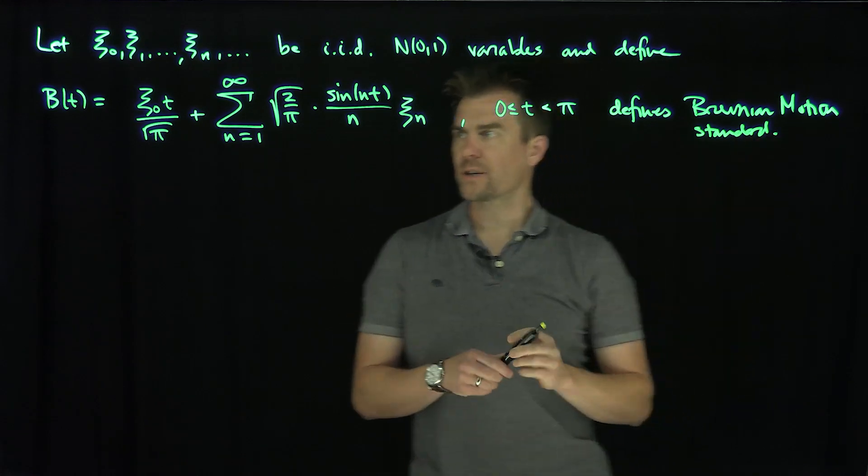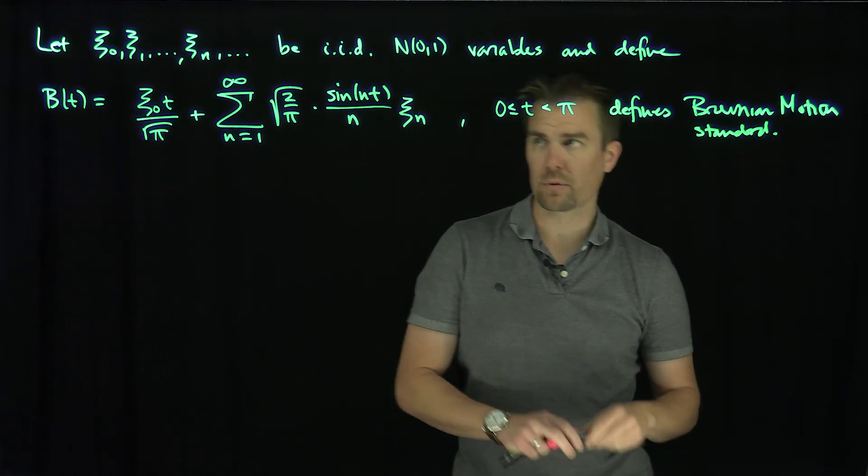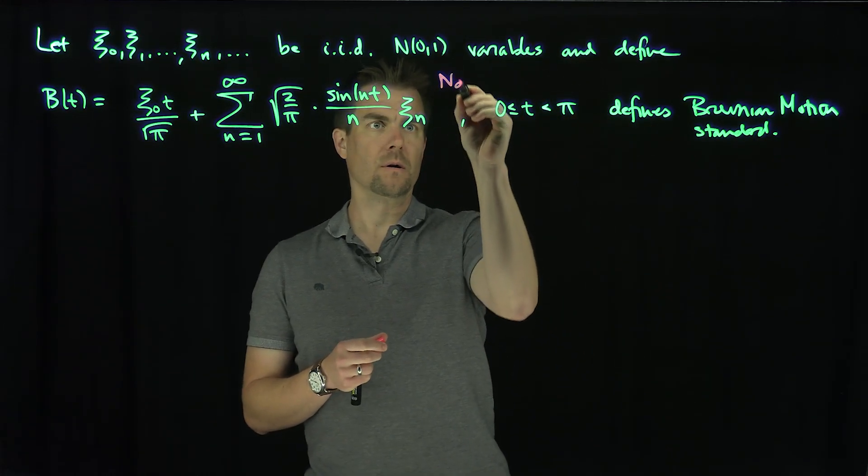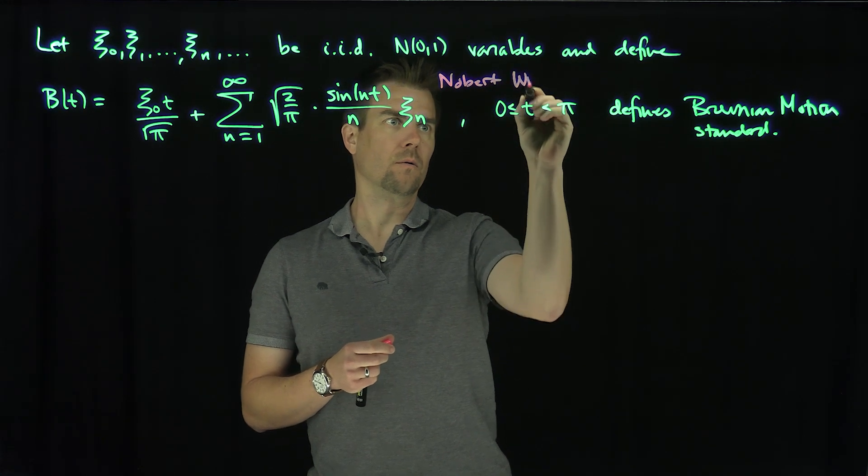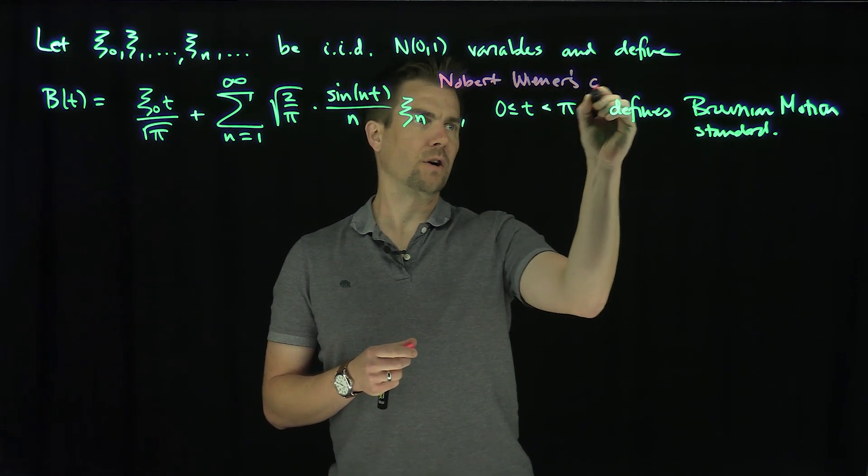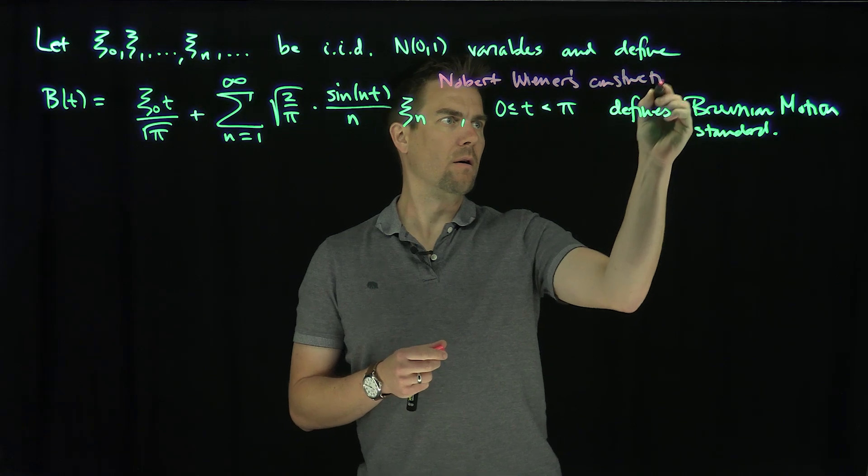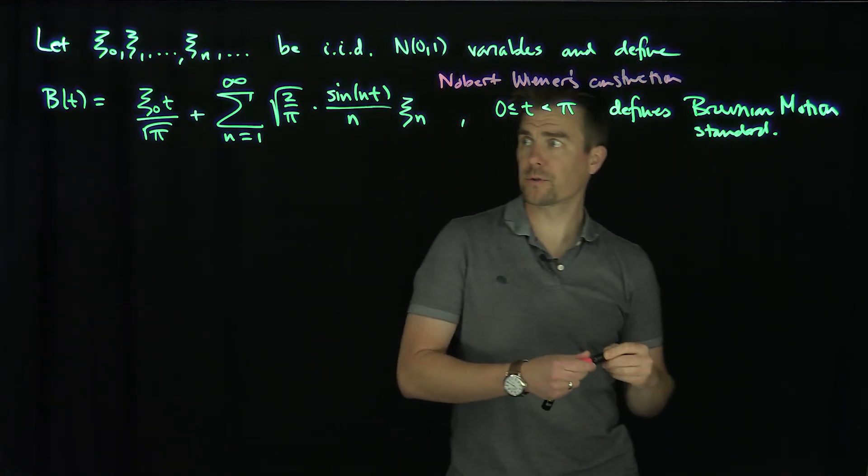This is actually the method that Norbert Wiener proved. This is Norbert Wiener construction. This is the first construction of Brownian Motion.